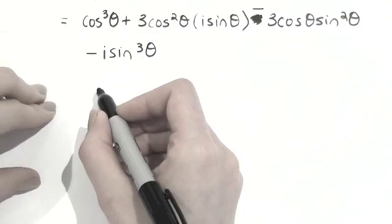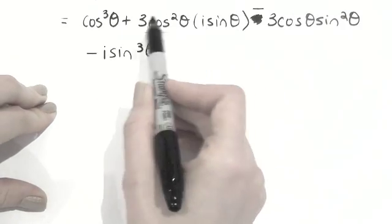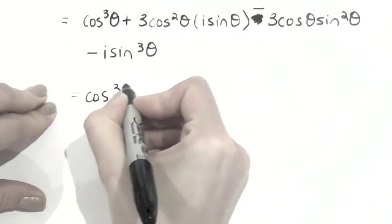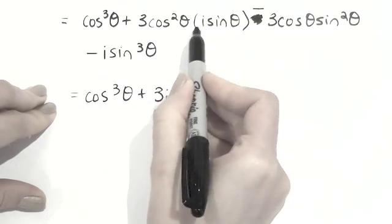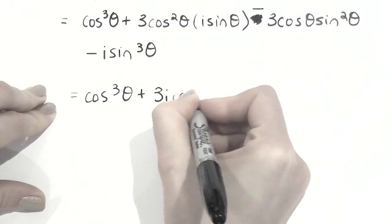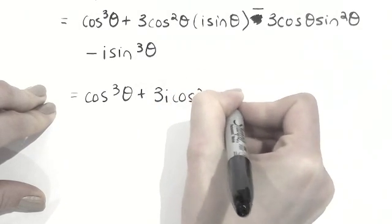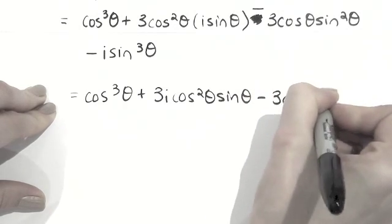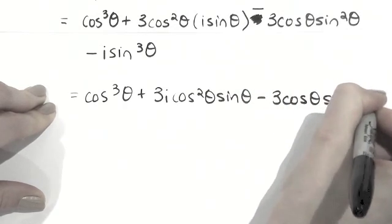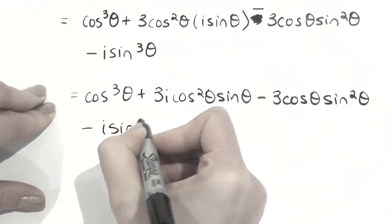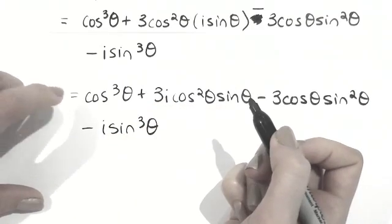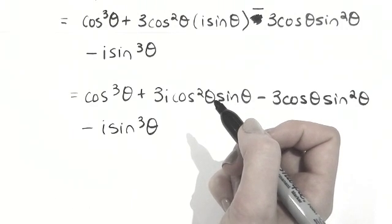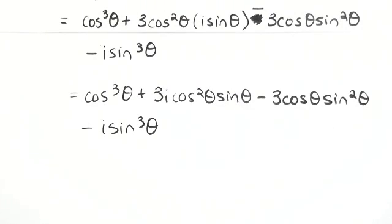So I'll rewrite that one last time, bringing our i's to the front because generally we tend to do that. We've got cos cubed theta plus 3i cos squared theta sine theta minus 3 cos theta sine squared theta minus i sine cubed theta. And that's the expansion of cos theta plus i sine theta cubed. So that's our final answer.